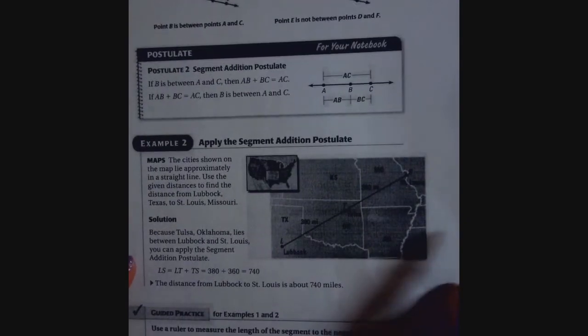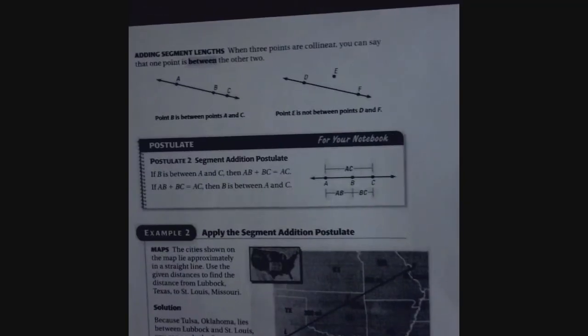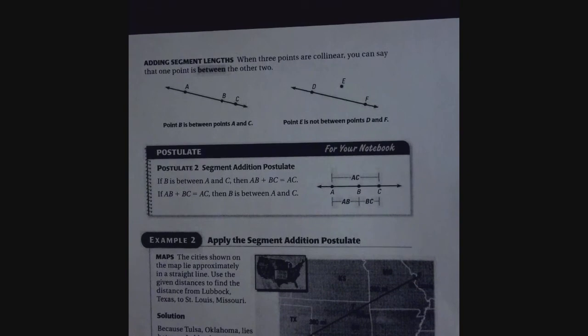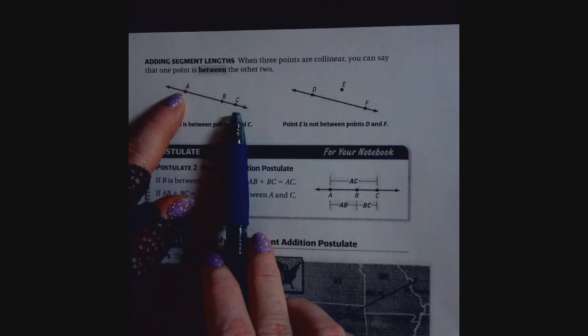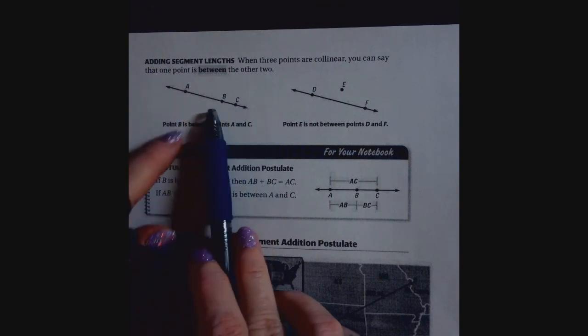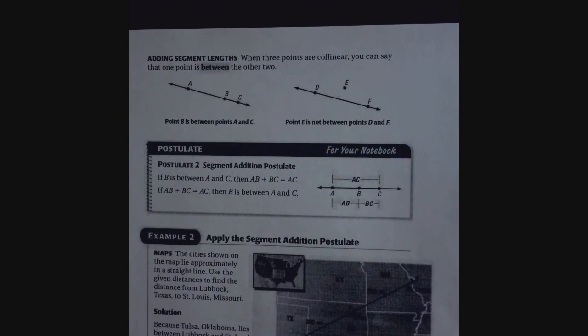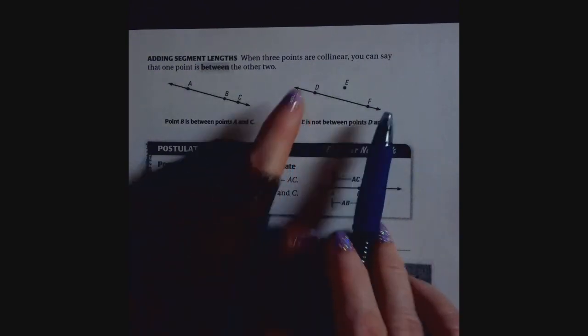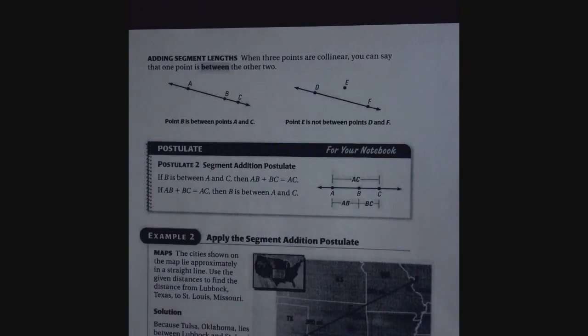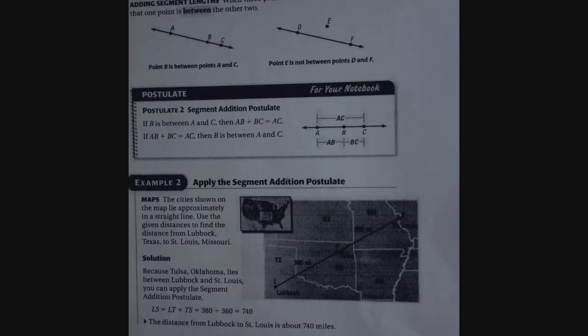So let's go on to example two. We're going to apply it to a real-world problem. Before we start, let's go through this. So adding segment lengths, when three points are collinear, so on the same line, you can say that one point is between the other two. So here, look at this line A, B, C. You see that B is between the line, so point B is between A and C, so it's definitely collinear. But over here, you've got line D, F, but point E is not on the same line, so point E is not going to be collinear. See the difference between them, very clear to see.